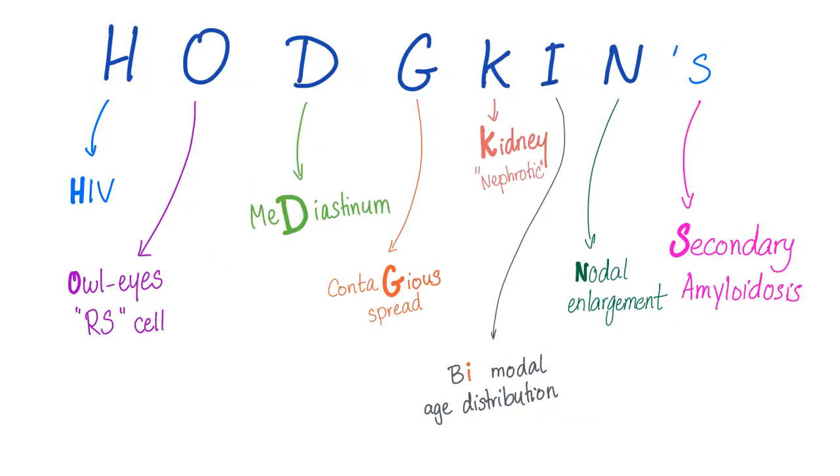The second mnemonic, just try the word Hodgkin's. H for HIV. What other virus? Correct. Epstein-Barr virus. O for the owl eye of the Reed-Sternberg cell.